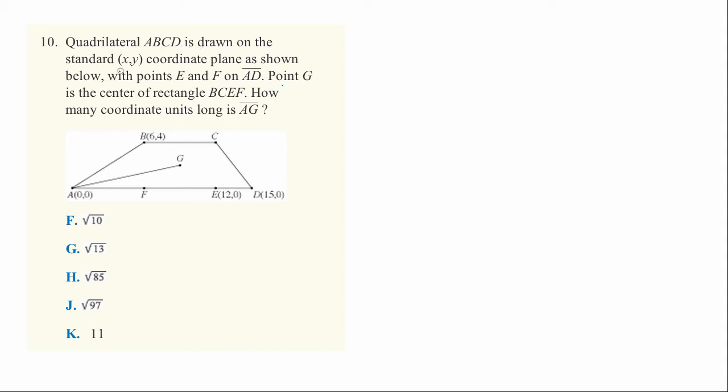Quadrilateral ABCD is drawn on the standard XY coordinate plane as shown below with points E and F on the line segment AD. Point G, that's this point here, is in the center of the rectangle B to C to E to F and back up to B again. How many coordinate units long is the line segment from A to G?